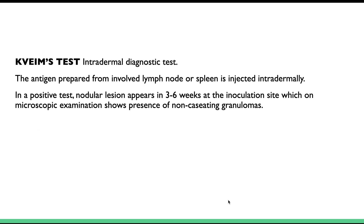A test used in sarcoidosis is the Kveim test, an intradermal diagnostic test not routinely done. The antigen is prepared from an involved lymph node or spleen and injected intradermally. In a positive test, a nodular lesion appears 3 to 7 weeks after injection, and microscopically, non-caseating granulomas are seen.